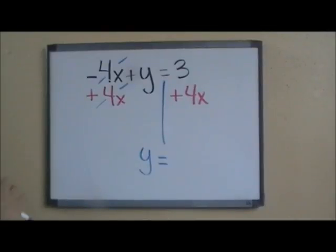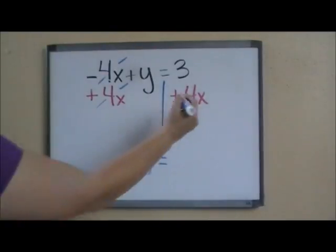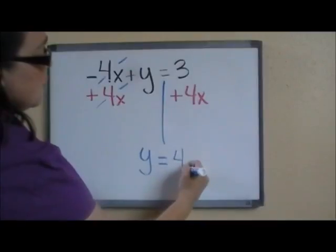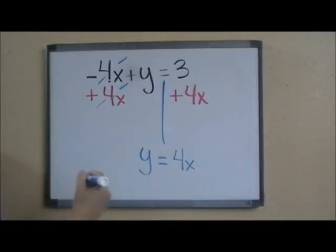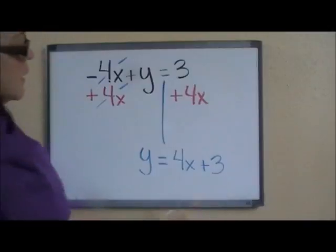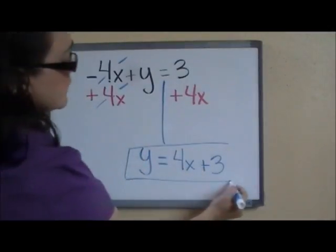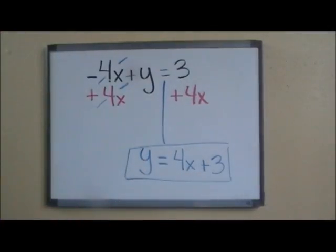So again, what I'll do is just write them in order next to each other exactly as they are. First, the positive 4x, and then my positive 3. And this is my new equation.